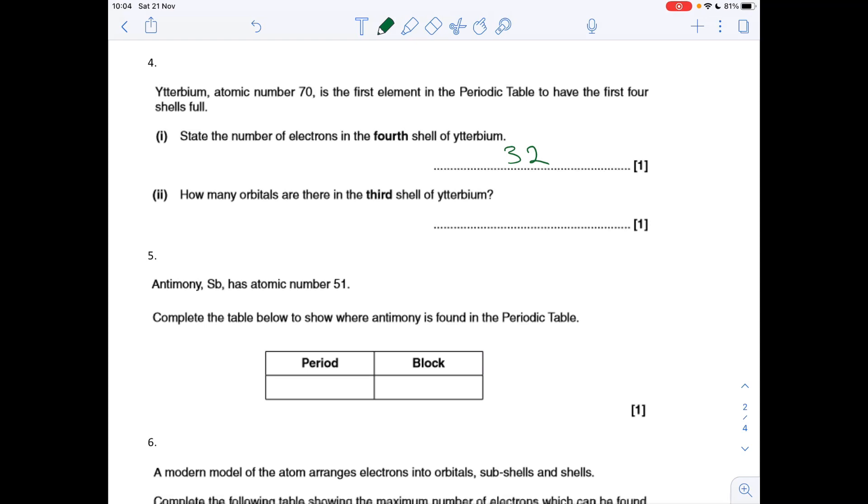How many orbitals are there in the third shell of terbium? The third shell consists of the 3s subshell, 3p subshell, and 3d subshell. In terms of orbitals, there's one orbital in the 3s, three in 3p, and five in 3d. Add them together and you get nine orbitals.